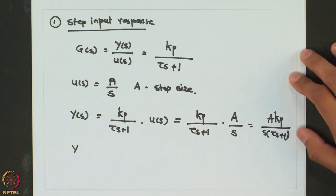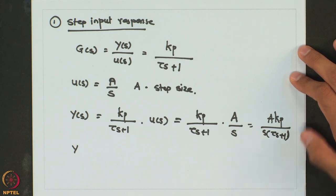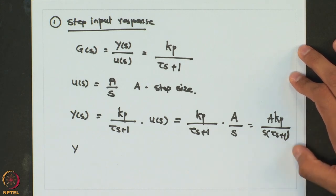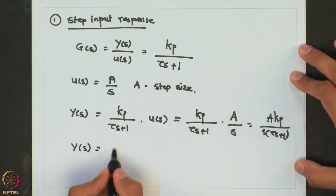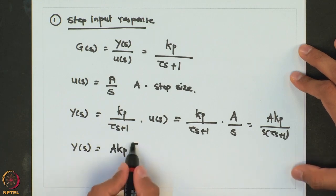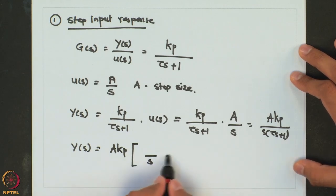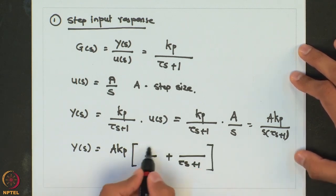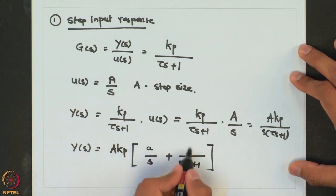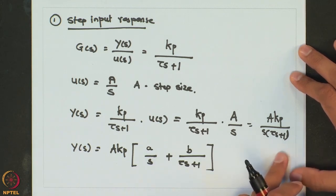In order to get the response in the real time domain, we will have to invert this Laplace transform. The method we are going to use is the method of partial fractions. We will split this Laplace transform into parts for which we know the inverse. We can write Y(s) = A·Kp with denominator S·(tau·s + 1), and split it into two fractions with coefficients a and b, whose addition gives 1 over S·(tau·s + 1).